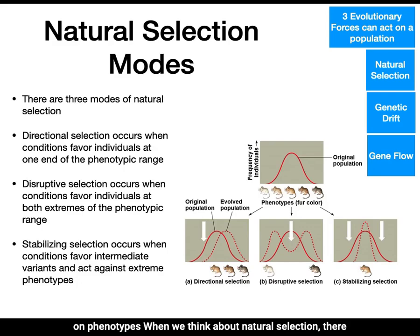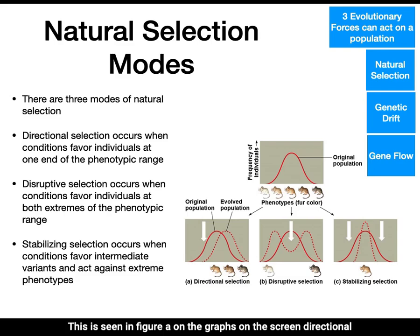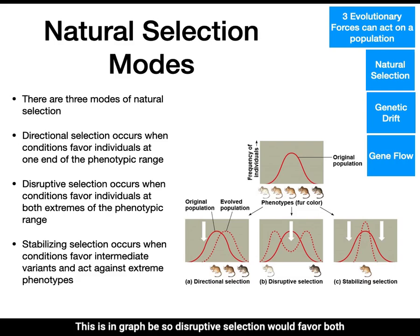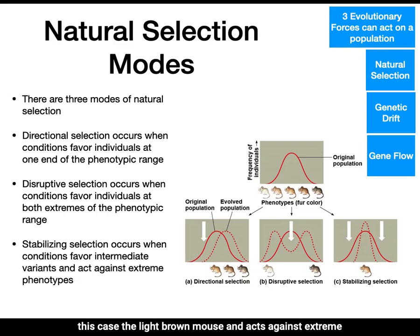When we think about natural selection, there are three modes: directional, disruptive, and stabilizing. Directional selection occurs when conditions favor individuals at one end of the phenotypic range — as seen in figure A on the graphs, directional selection is favoring the darker-furred mouse, favoring a mouse on one end of the phenotypic range. Disruptive selection is a condition which favors individuals at both extremes of the phenotypic range — as in graph B, disruptive selection would favor both the lighter mouse and the darker mouse, but not a mouse of medium darkness. Finally, in figure C is stabilizing selection, where conditions favor an intermediate variant — in this case the light brown mouse — and act against extreme phenotypes.